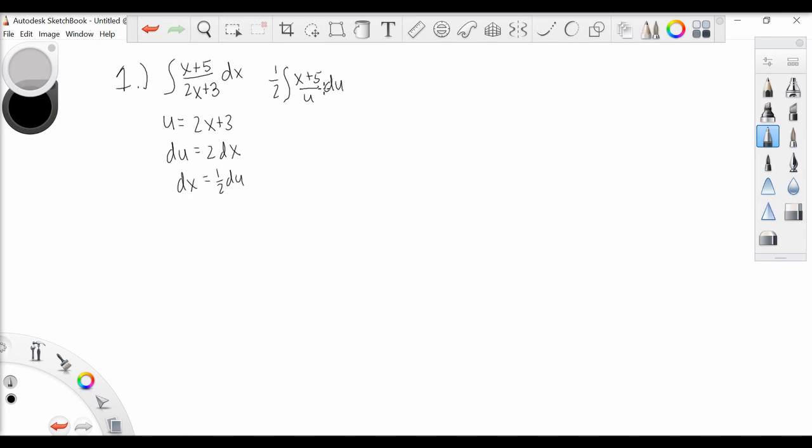Now we can go back to our u relationship in order to simplify this integral further. So we know u is equal to 2x plus 3, and we can arrange this as u minus 3 equals 2x, and thus x is equal to u minus 3 over 2.